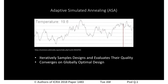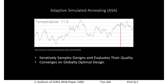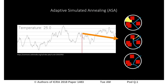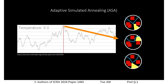To optimize the designs, we leverage the Global Optimization Algorithm Adapted Simulated Annealing, or ASA. ASA iteratively samples designs in design space and evaluates their quality in order to converge on a globally optimal design. Early in the design process, it may sample an inferior design, but as time progresses, it will converge on the optimal design.